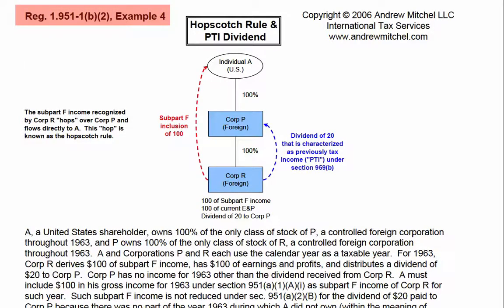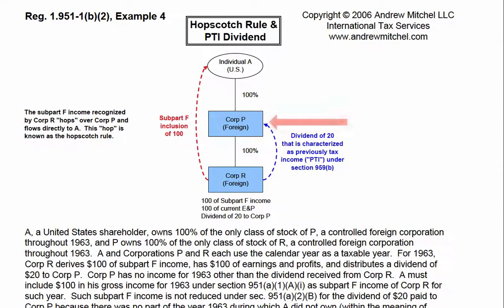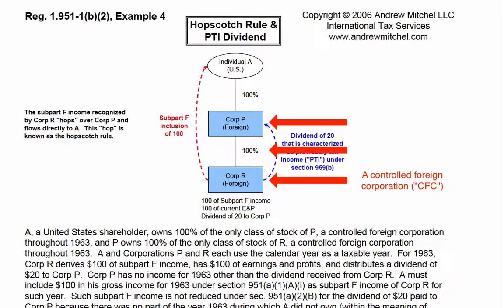In Example 4 of Regulation 1.951-1(b)(2), Individual A, a U.S. person, owned 100% of Corp. P, a controlled foreign corporation. Corp. P, in turn, owned 100% of Corp. R, another controlled foreign corporation.